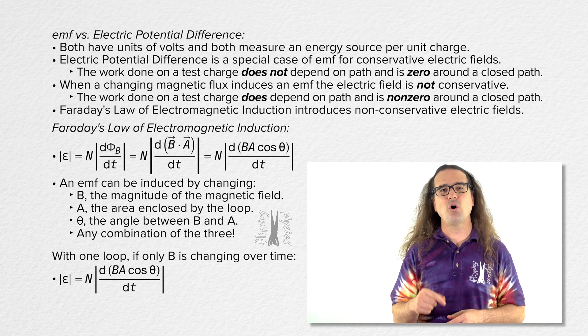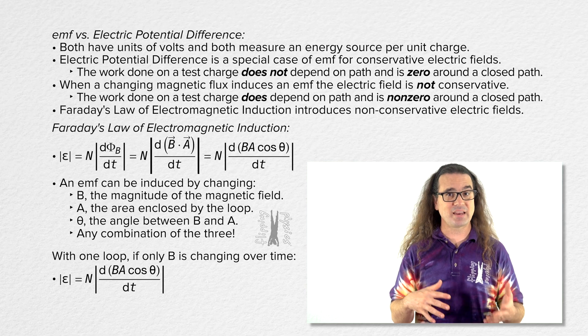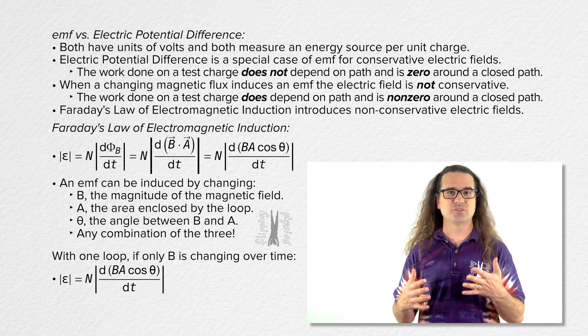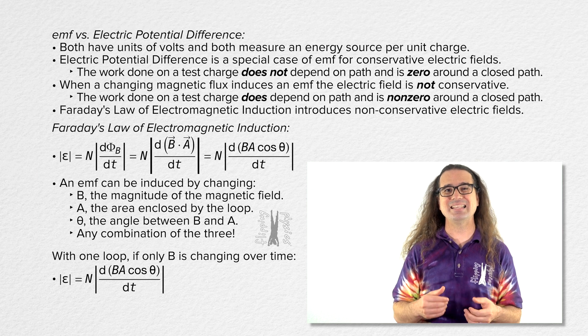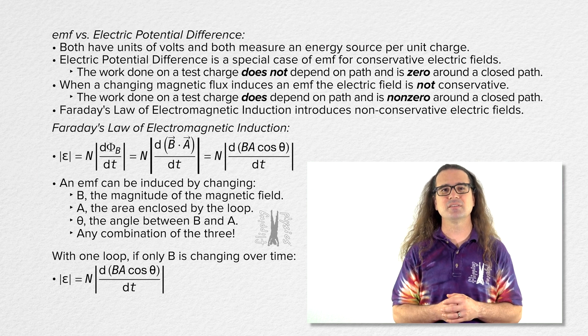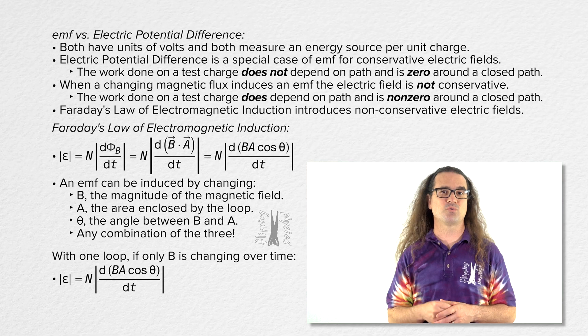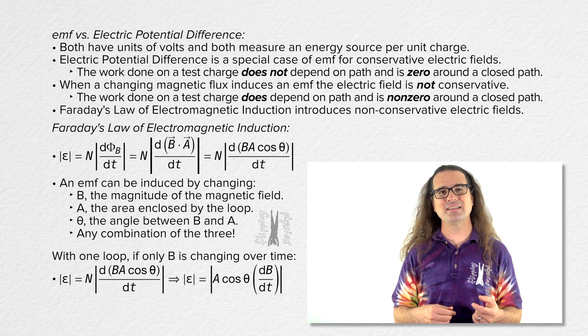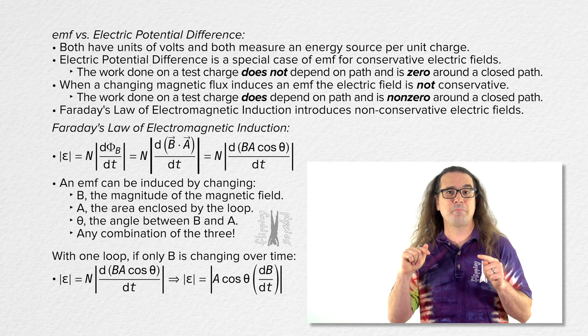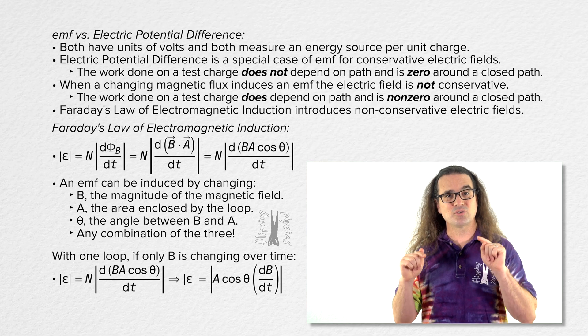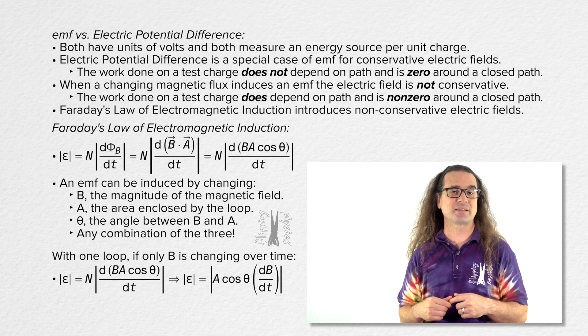For example, if the only one of these three variables—magnetic field, loop area, and the angle between the two—which is changing is the magnitude of the magnetic field, then the induced EMF through one loop equals the magnitude of the loop area times cosine of the angle between the area vector and magnetic field vector times the derivative of the magnetic field with respect to time.